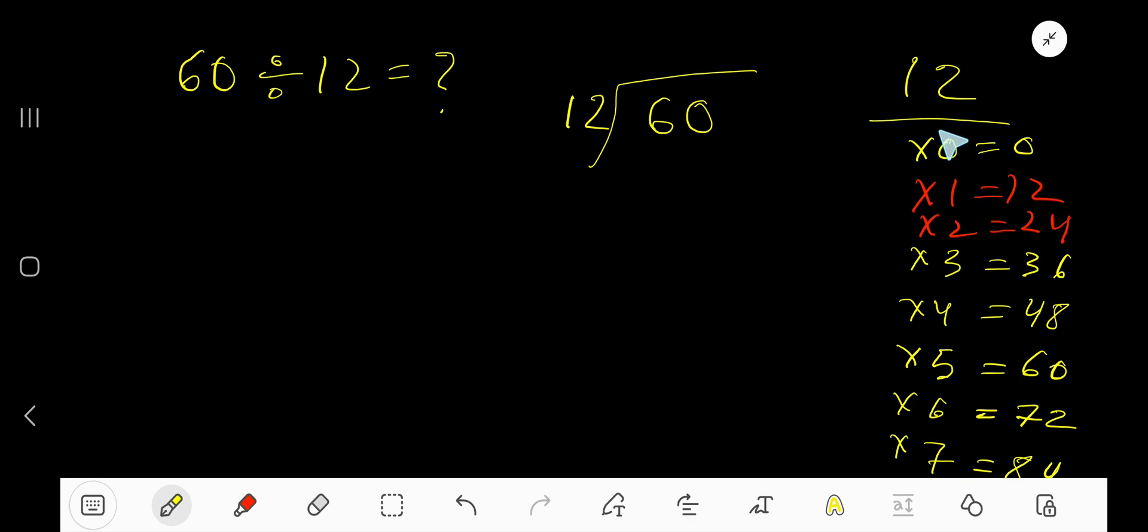To find out the multiplication table of 12, just add 12 with the previous step. 0 plus 12 is 12, 12 plus 12 is 24, 24 plus 12 is 36, 36 plus 12 is 48, 48 plus 12 is 60. This process will continue according to your need.